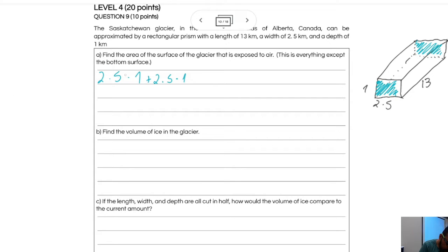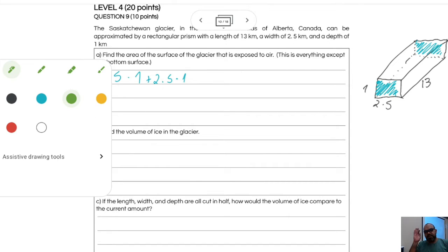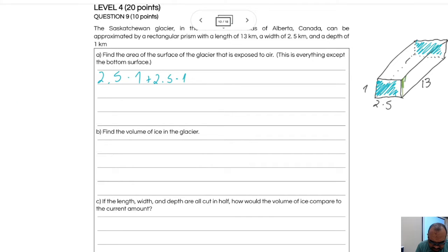Great! 2.5 times 1, 2.5 times 1. Left and right, left and right. On left, I know is this one here, 1 and that one there in the back. Left and right here, if you notice it's 13 by 1, 13 by 1. Then it is surface area, 13 times 1 plus 13 times 1.